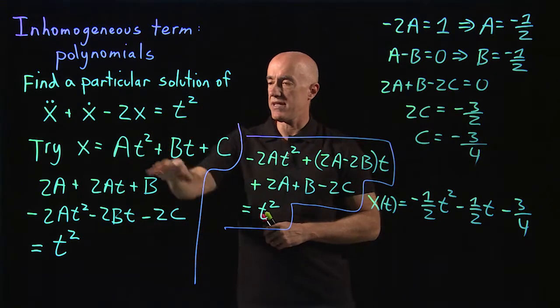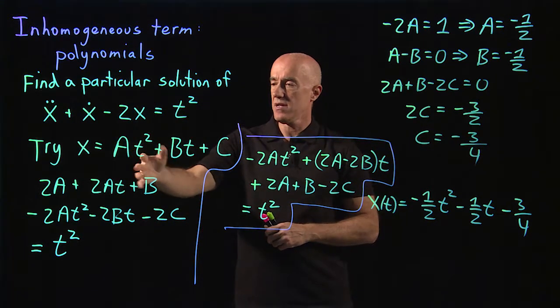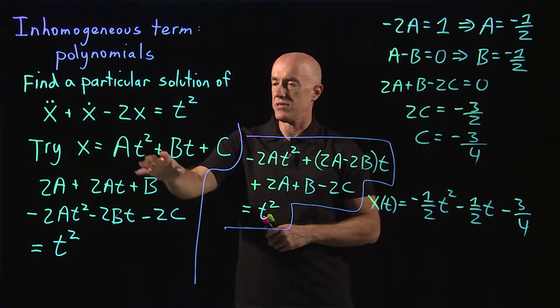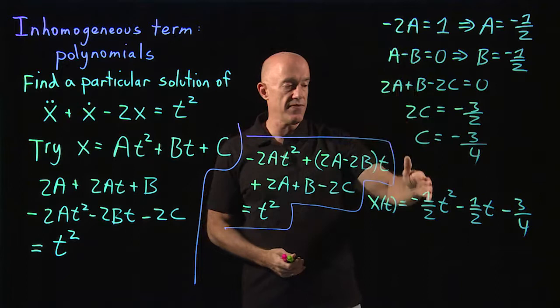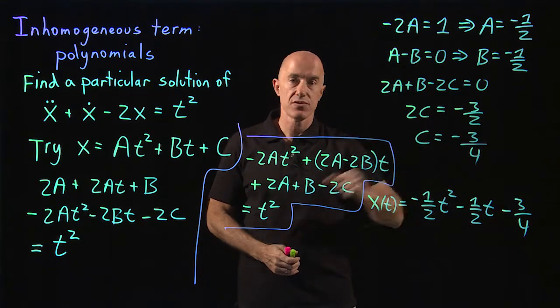Then when we substitute in, we'll end up with a system of three linear equations and three unknowns. The unknowns are a, b, and c. And we solve it and we get our solution.